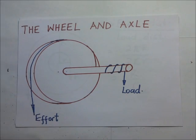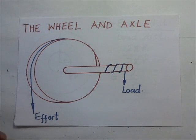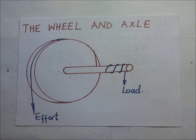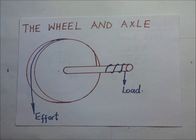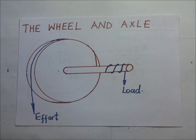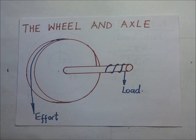Today we look at another simple machine: the wheel and axle. The wheel and axle is a simple machine used, for example, in the steering rod of a car. When you look at it in terms of the steering rod, you realize that an effort is applied on a very large wheel.